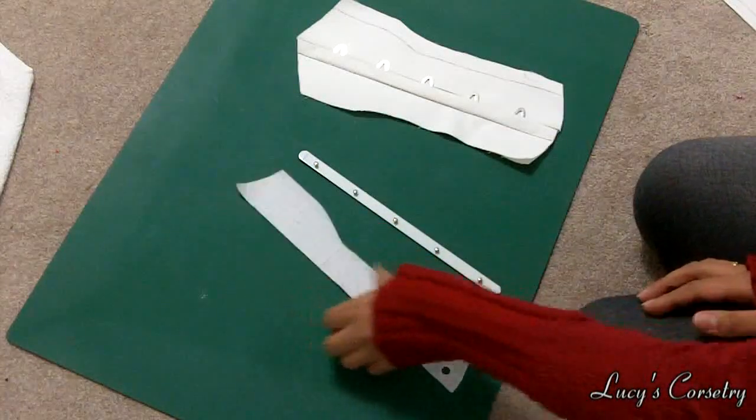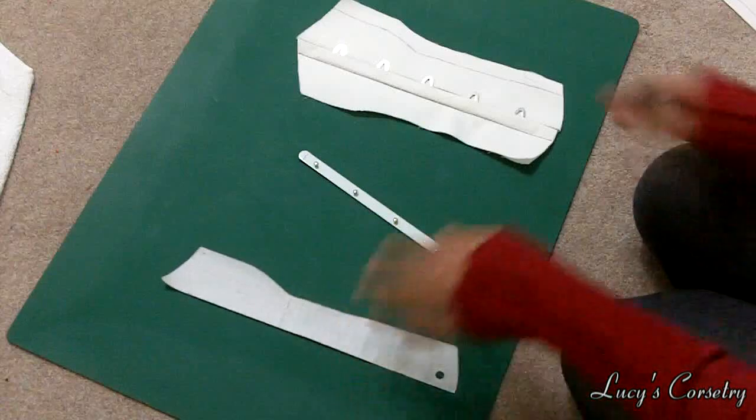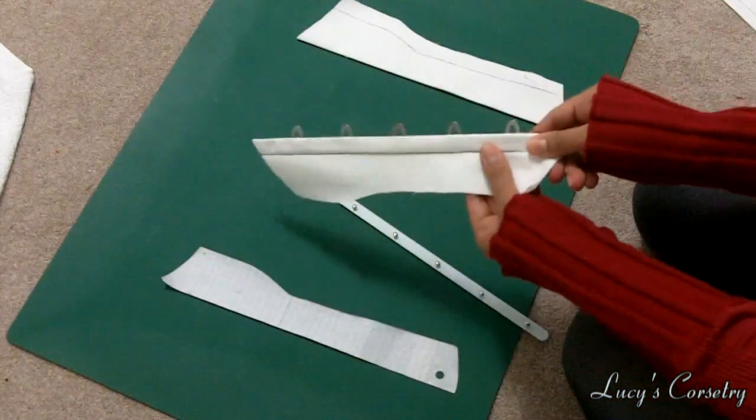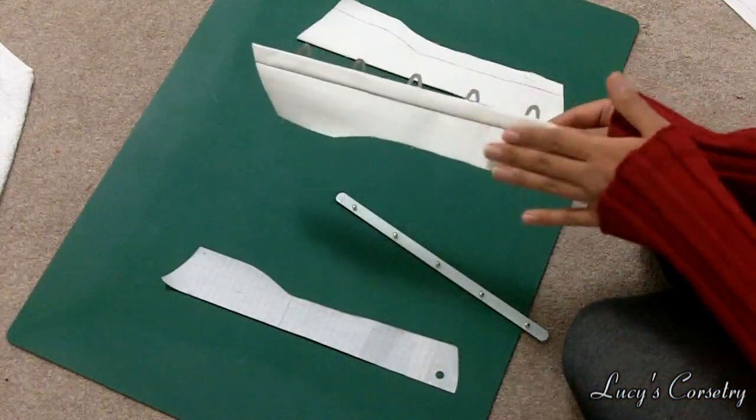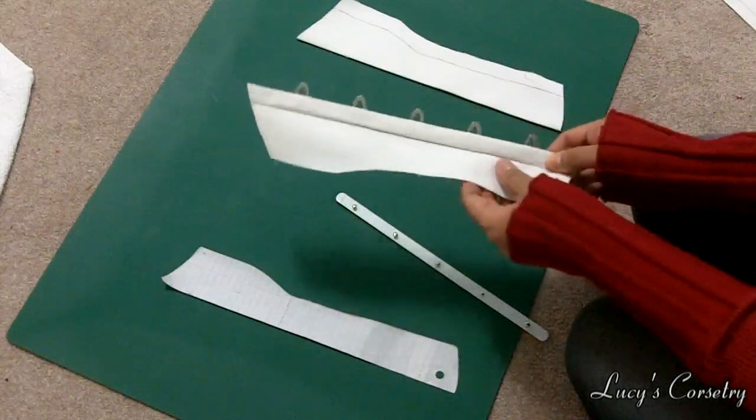You can see here I have the first panel of a corset pattern and I've already inserted the loop side of the busk here. If you want to learn how to do that I have a tutorial that I made from a year or two ago.